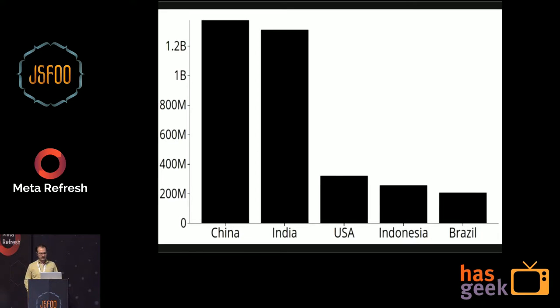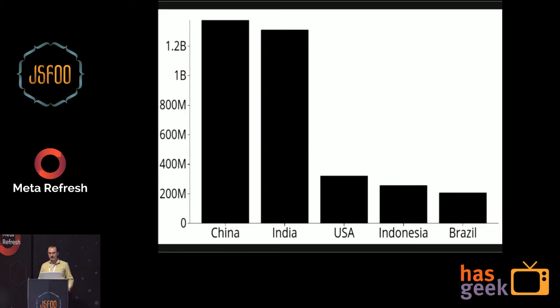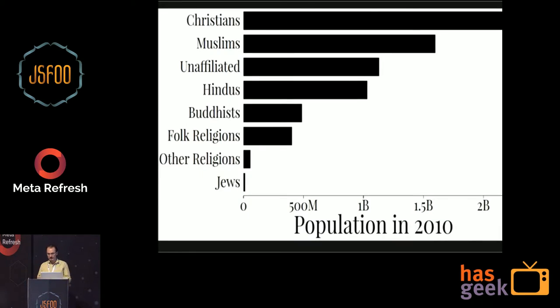Another thing I was curious about is religion — what are all the religions of the world and how are they distributed? Here's another bar chart, a horizontal variation. Horizontal bar charts are great because you can show many more bars.